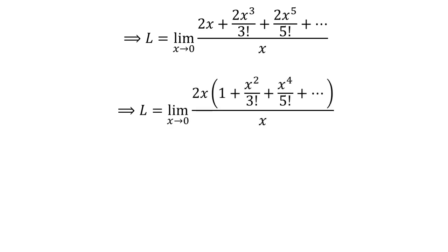Here, I have taken the common factor 2 times x out in the numerator expression of the limit. Here, I have cancelled out the common factor x in the numerator and the denominator.